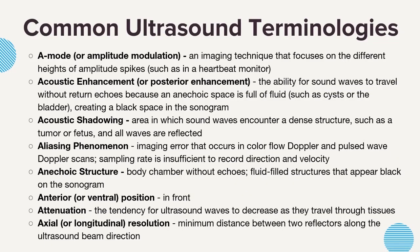Common ultrasound terminologies: A-mode, or amplitude modulation, is an imaging technique that focuses on the different heights of amplitude spikes, such as in a heartbeat monitor. Acoustic enhancement, or posterior enhancement, is the ability for sound waves to travel without return echoes because an anechoic space is full of fluid, such as a cyst or bladder, creating a black space in the sonogram. Acoustic shadowing is an area where sound waves encounter a dense structure, such as a tumor or fetus, and all waves are reflected. Aliasing phenomenon is an imaging error that occurs in color flow Doppler and pulsed wave Doppler scans when the sampling rate is insufficient to record direction and/or velocity. Anechoic structure refers to body chambers without echoes — fluid-filled structures that appear black on the sonogram.